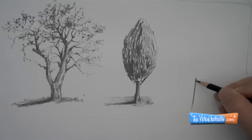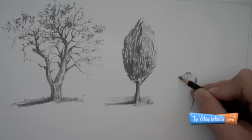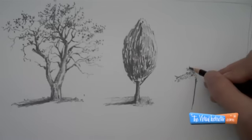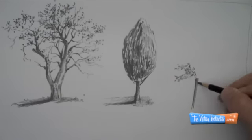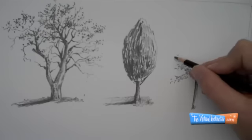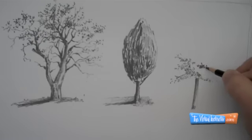All right, we'll do one more tree here. And this time, I'm starting with the trunk, and then I'm just going to go ahead and start making the texture of the leaves. So all three of these trees are different approaches to drawing the tree. The first one, I drew the trunk up and then drew the branches and then added the leaves.